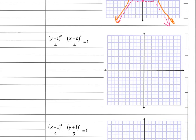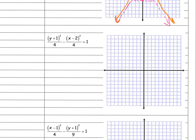We're going to do the same thing again — this time I have a different center, but we're still doing exactly the same process. I'll look for my center first. The x term is 2 and the y term is negative 1, so my center is at (2, -1). Then a squared is 4 so a is 2, and b squared is also 4 so b is 2 — that one was kind of nice.